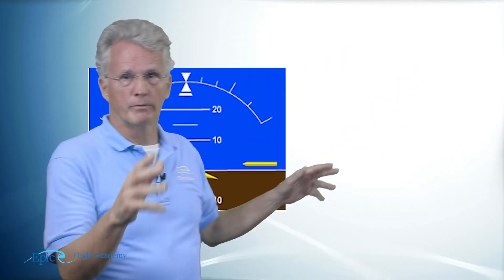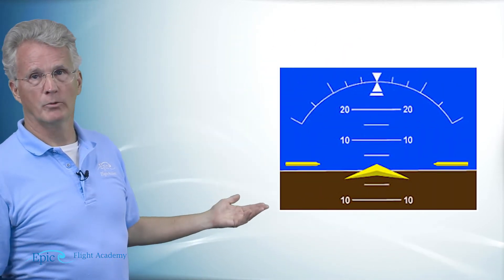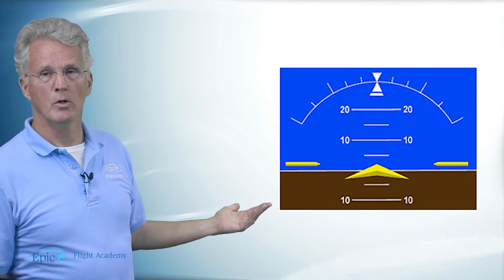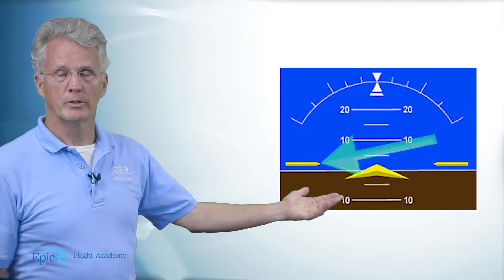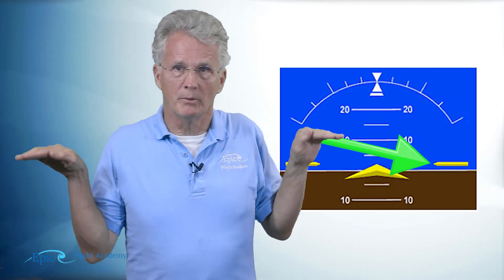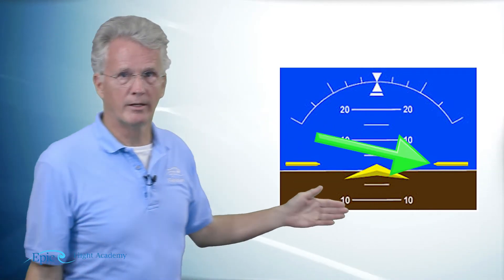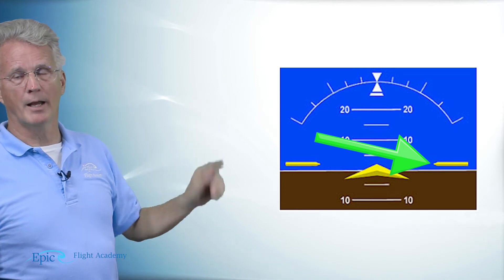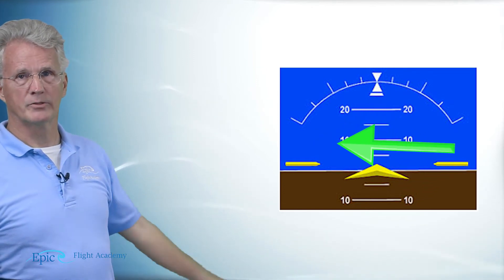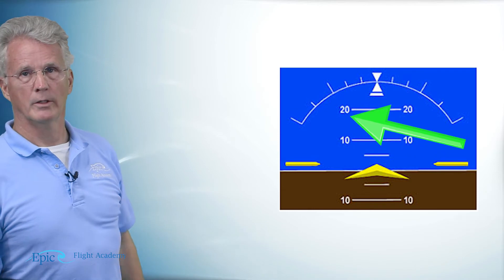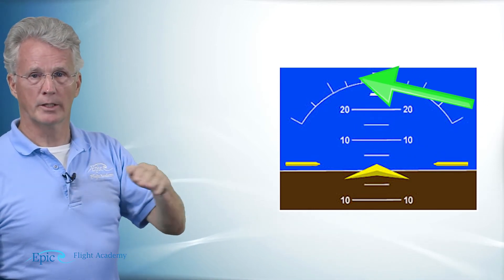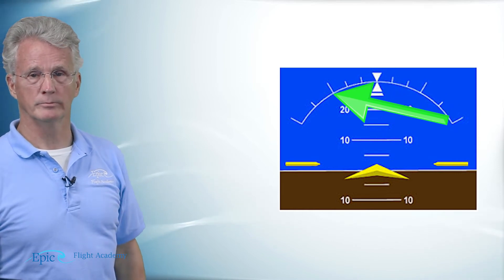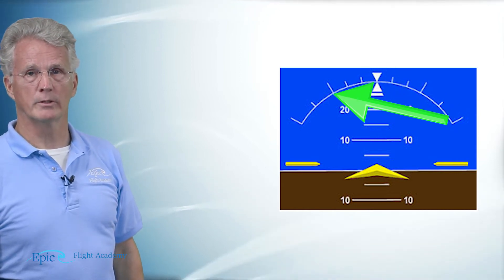Back to our close-up. When the aircraft is wings level, notice the little yellow wings on either side are level. At the top, the little white triangle lines up with the white triangle on the top of the arc. If you look left and right there are little tick marks. Each of those tick marks is 10 degrees of bank.